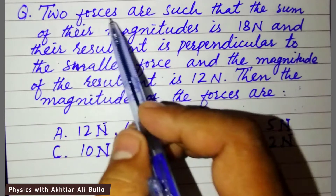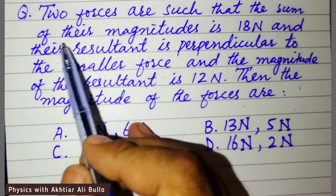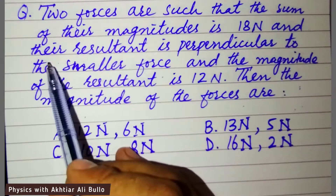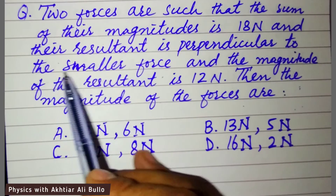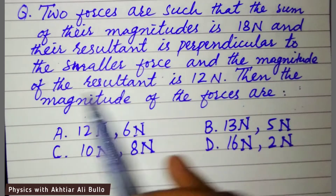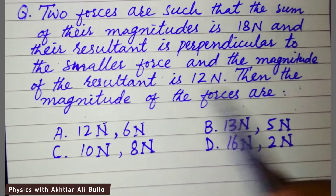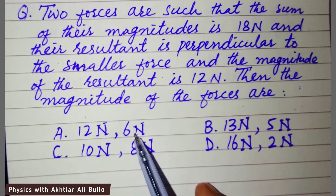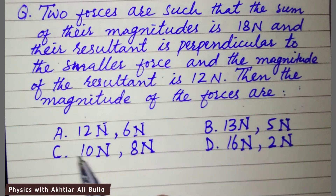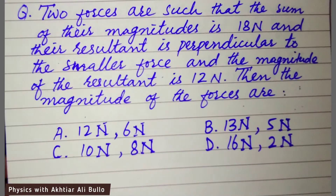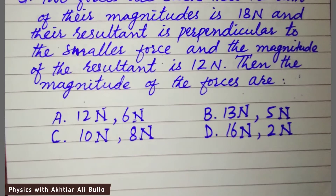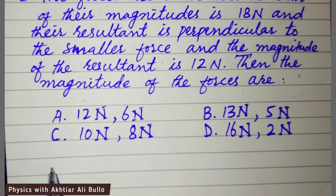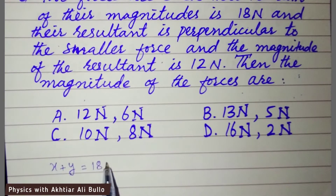The question is: two forces are such that the sum of their magnitudes is 18 newton and the resultant is perpendicular to the smaller force, and the magnitude of the resultant is 12 newton. Find the magnitude of the forces. Options: A) 12N, 6N  B) 13N, 5N  C) 10N, 8N  D) 16N, 2N. The sum of two forces x plus y is equal to 18 newton.